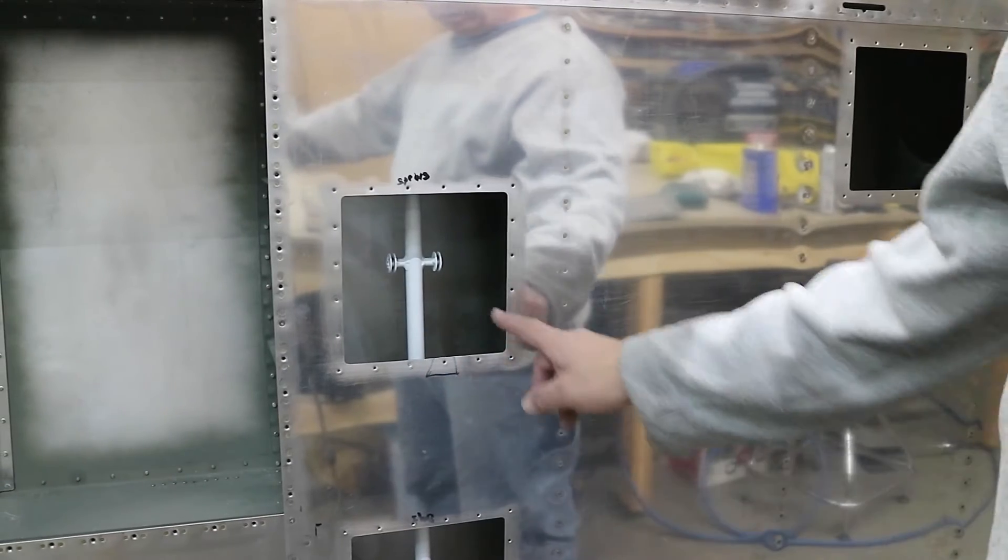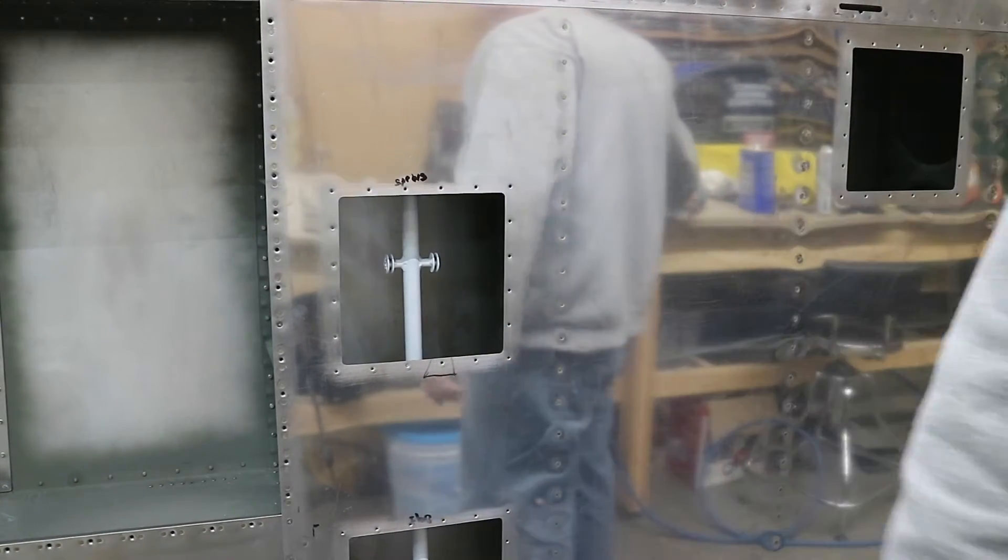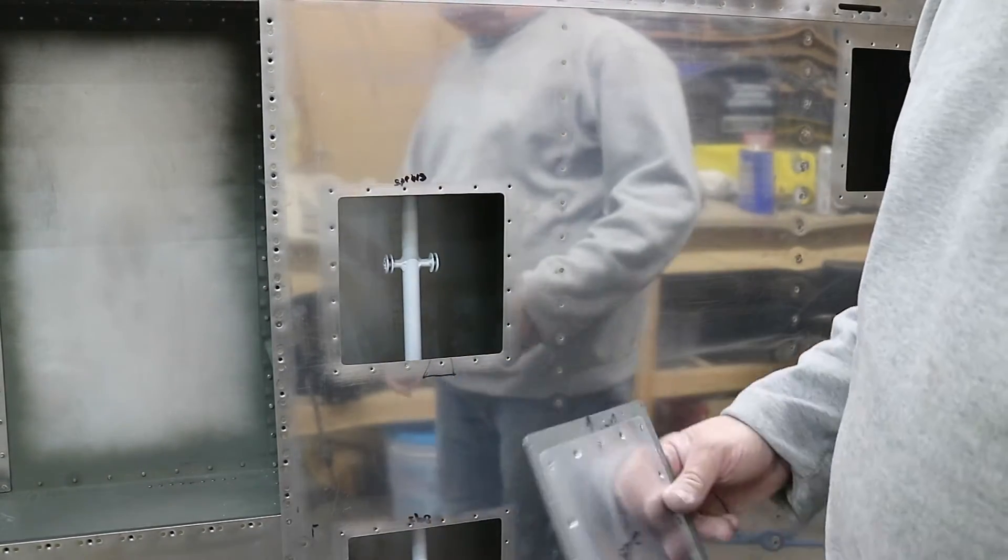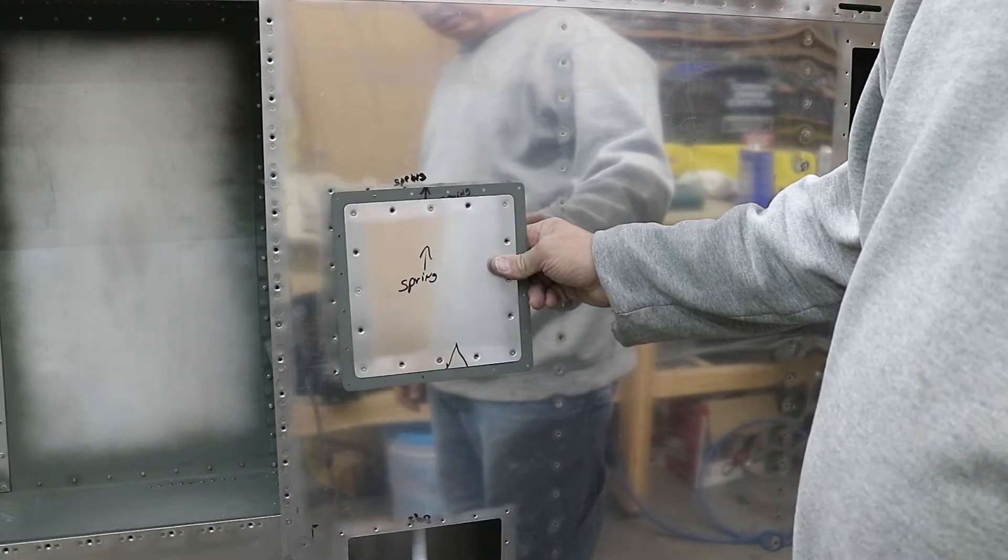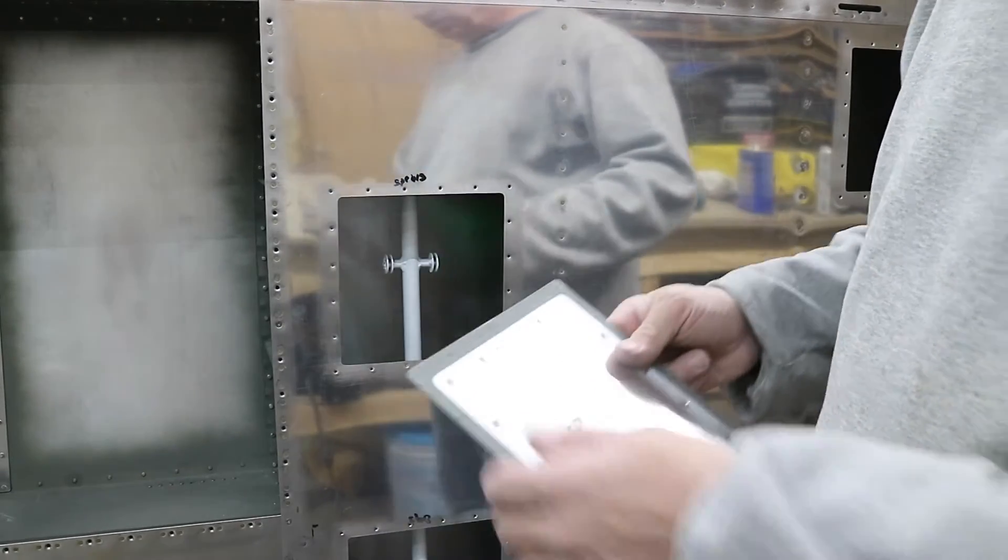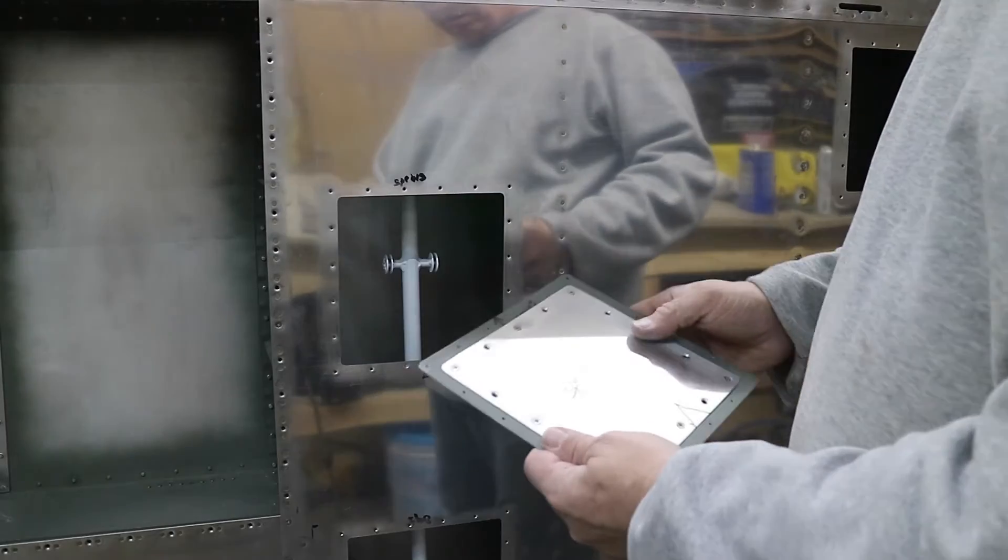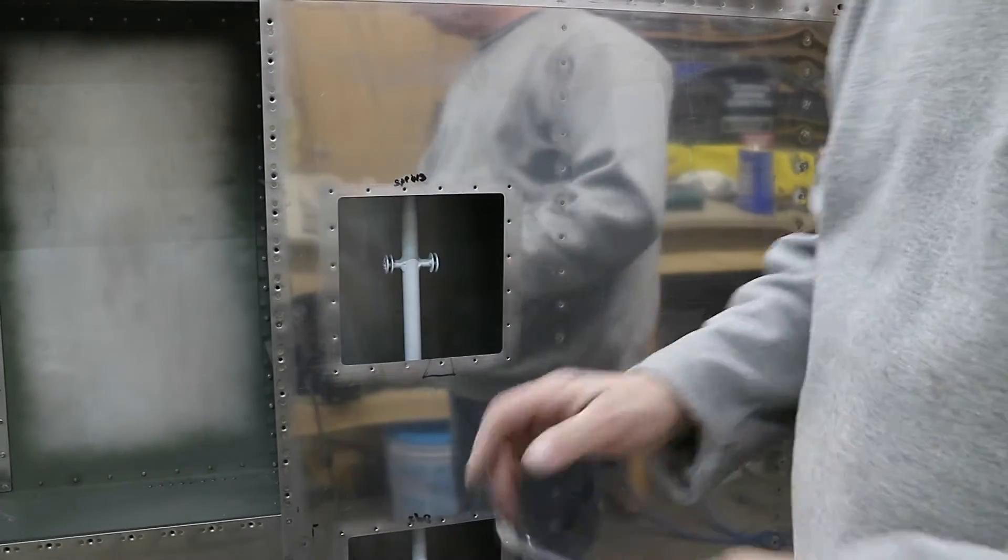I'm going to start out with this cover right here, which covers the top of the spring there. So this is the cover that goes in there. I'm going to go get it dimpled, and then we'll cleco it in place and fit it up.